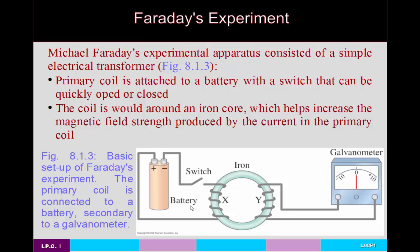Faraday's experimental apparatus was pretty simple. It consisted of something that could measure current — an ammeter or galvanometer — connected to a coiled wire that is electrically isolated from other sources, so there's no voltage source in this circuit. Then he has a second coil of wire — the primary coil — connected to a battery with a switch. When the switch is open there's no current flowing, hence no magnetic field produced. When the switch is thrown, charges begin moving, producing a magnetic field.